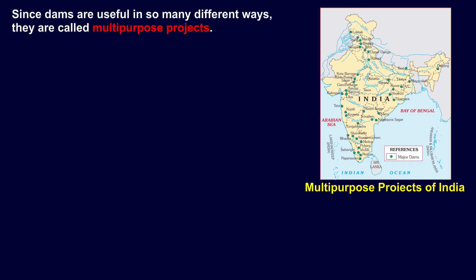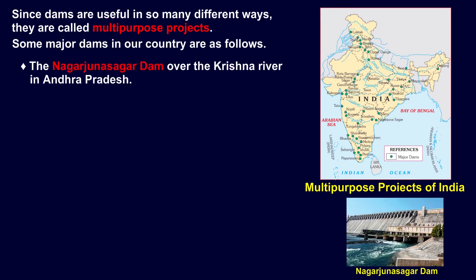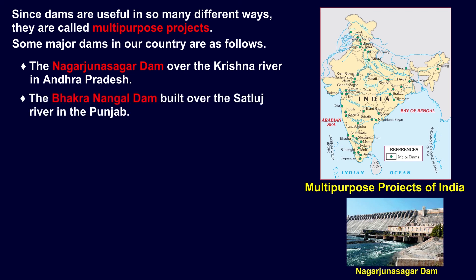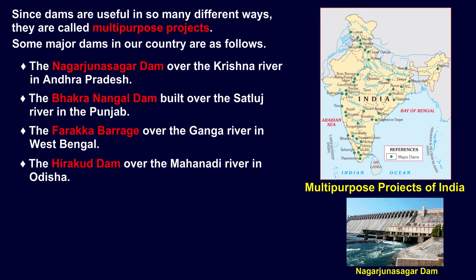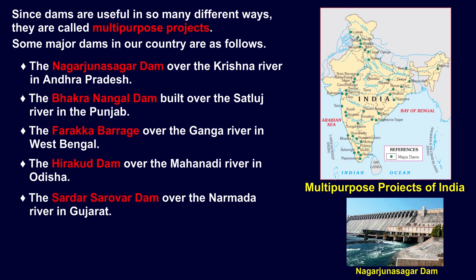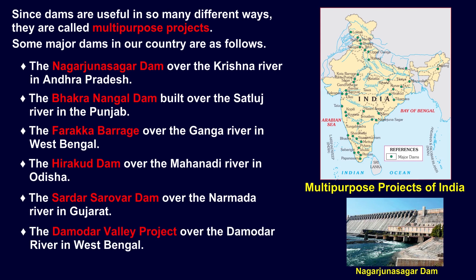Since dams are useful in so many different ways, they are called multipurpose projects. Some major dams in our country are: the Nagarjuna Sagar Dam over the Krishna river in Andhra Pradesh; the Bhakra Nangal Dam built over the Sutlej river in Punjab; the Farakka Barrage over the Ganga river in West Bengal; the Hirakud Dam over the Mahanadi river in Odisha; the Sardar Sarovar Dam over the Narmada river in Gujarat; and the Damodar Valley Project over the Damodar river in West Bengal.